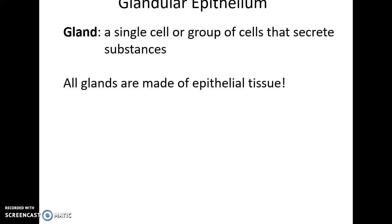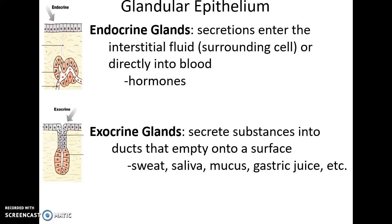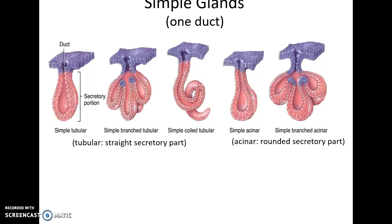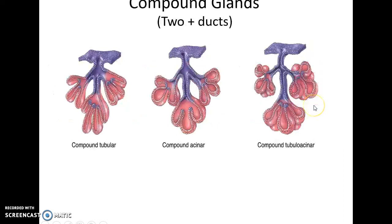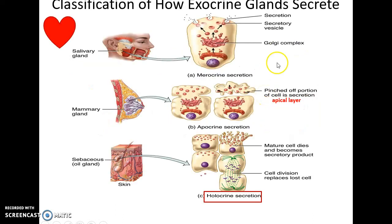Glands are single cells or groups of cells that secrete substances, and they are always made of epithelial tissue. Endocrine glands have no ducts and secrete their hormones into the surrounding fluids or bloodstream. Exocrine glands have ducts and secrete substances onto a surface — in the mouth, on the skin, inside the stomach, and various other places. Secretion in glands can occur by exocytosis, called merocrine secretion; by pinching off the apical layer of the cell, called apocrine secretion; or by the cells filling up with material, breaking apart, and dying, called holocrine secretion.